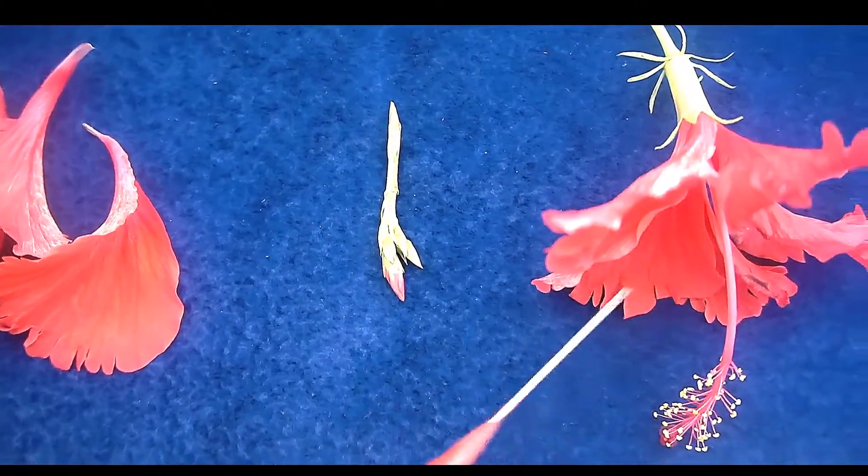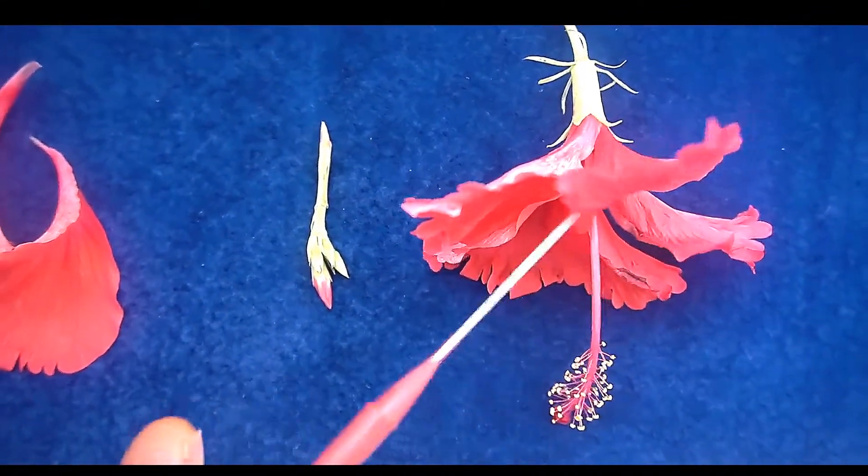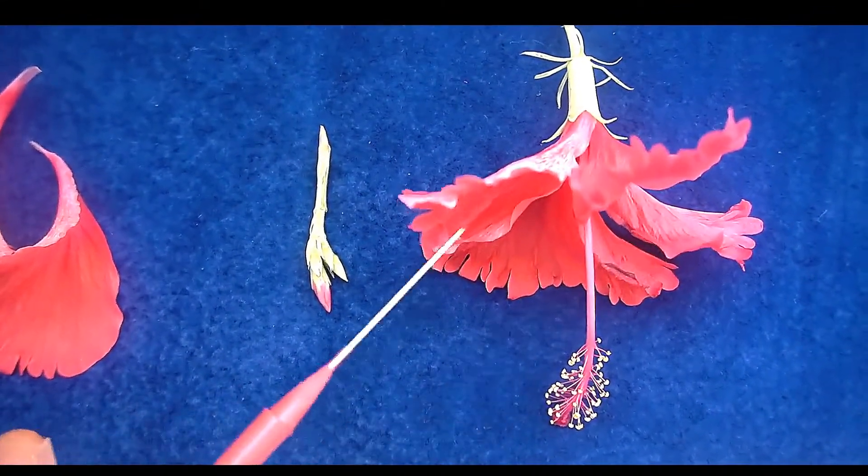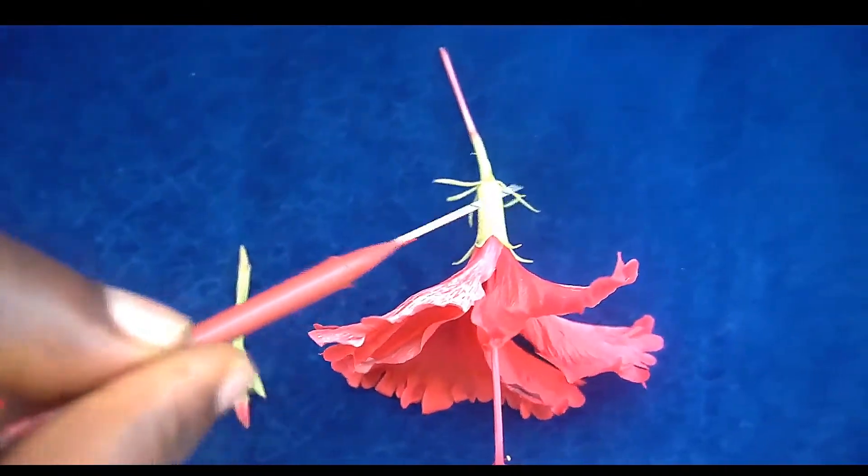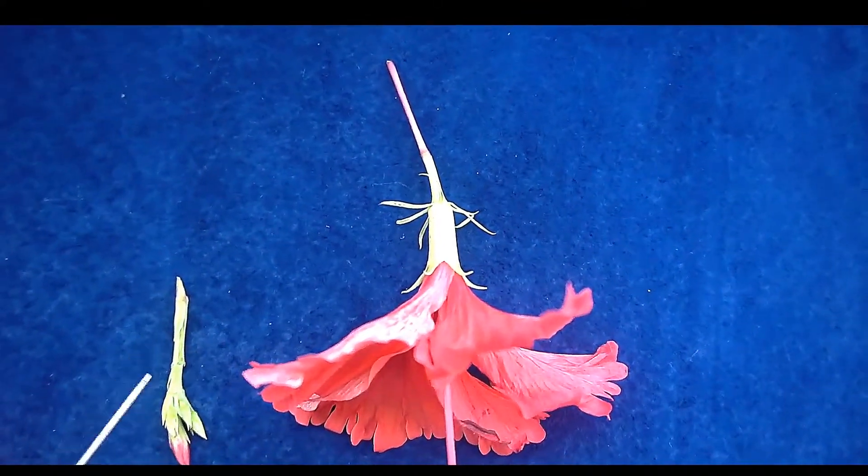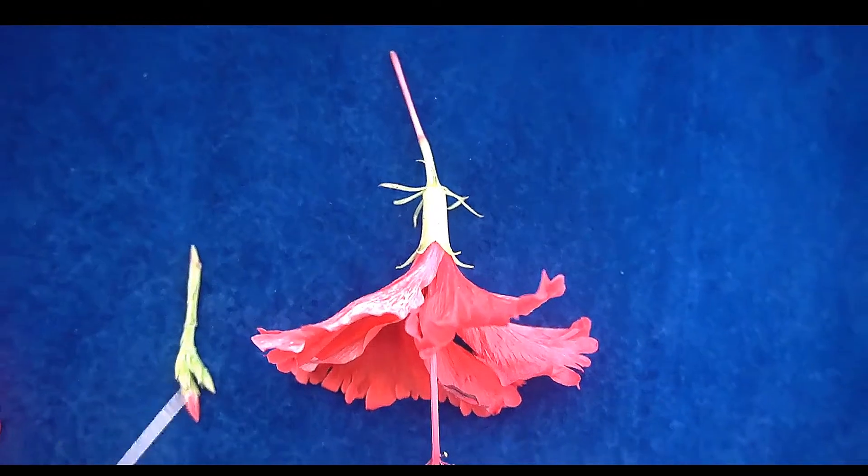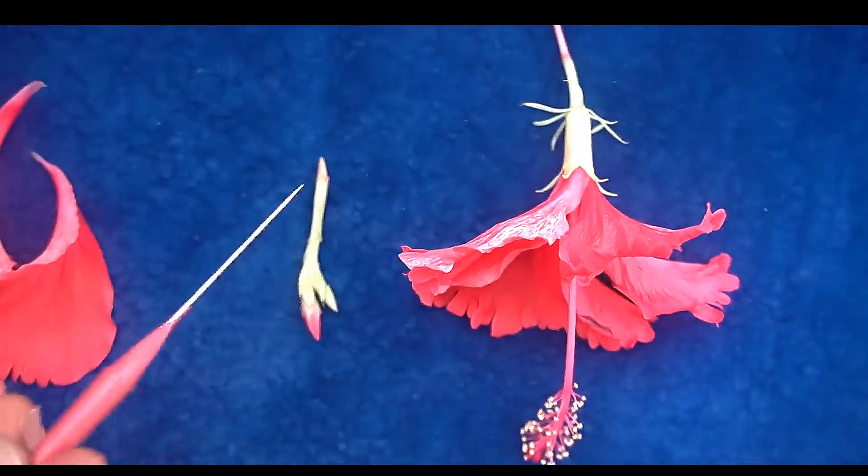So, as I said, it's the corolla that does the calling out. And this is the calyx that protects the corolla when it's in the stage of a flower bud, like we see here.